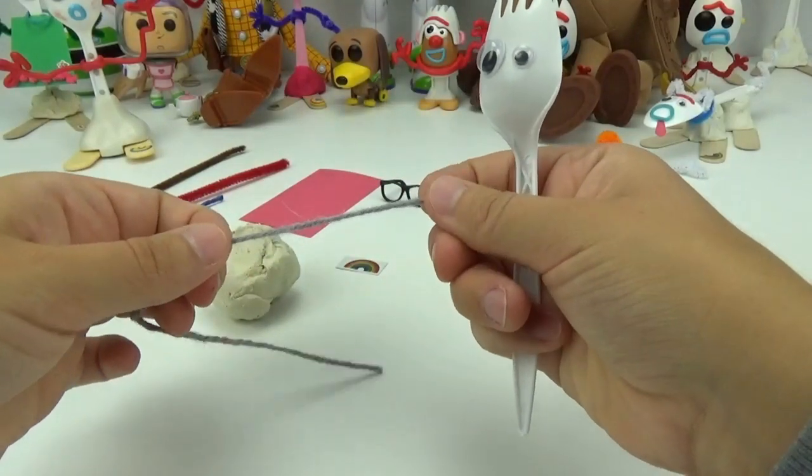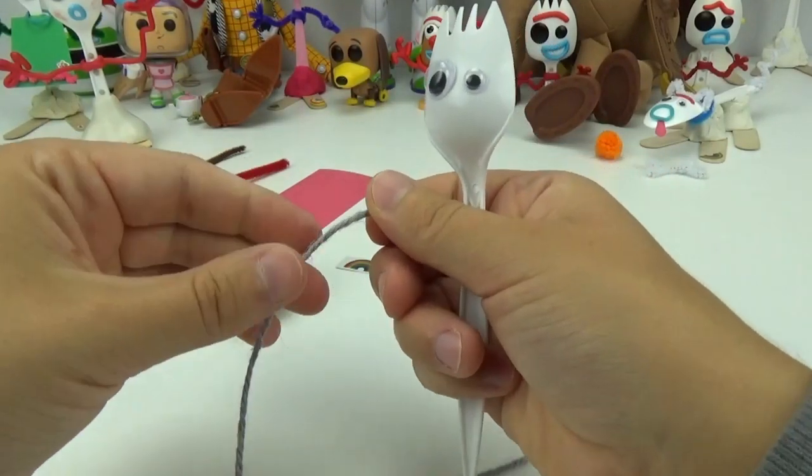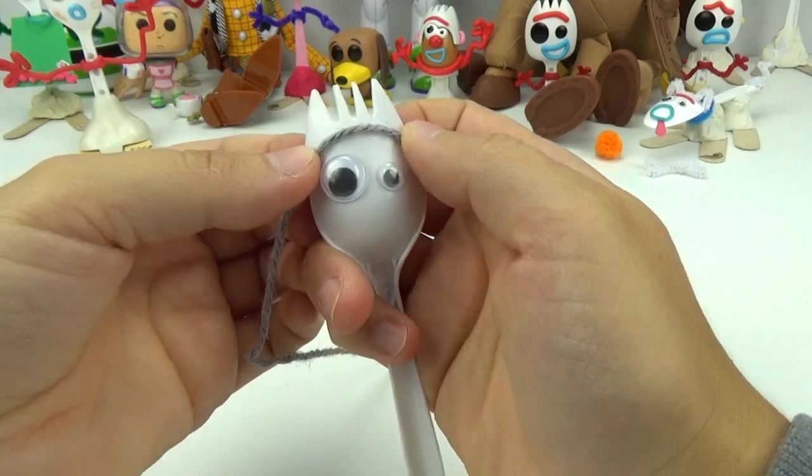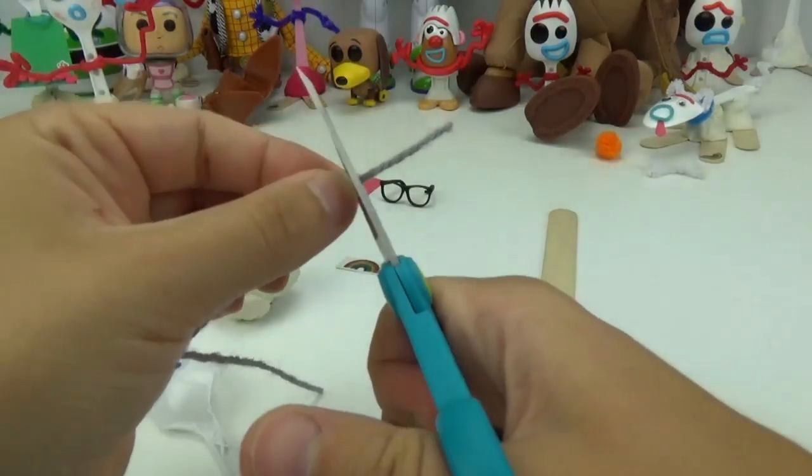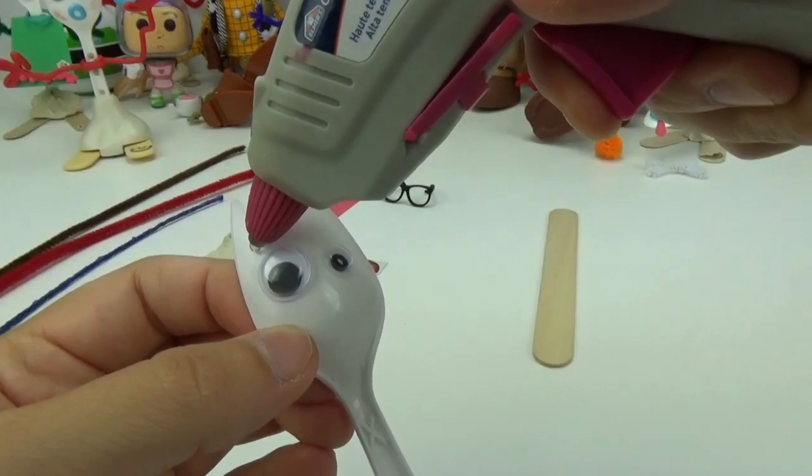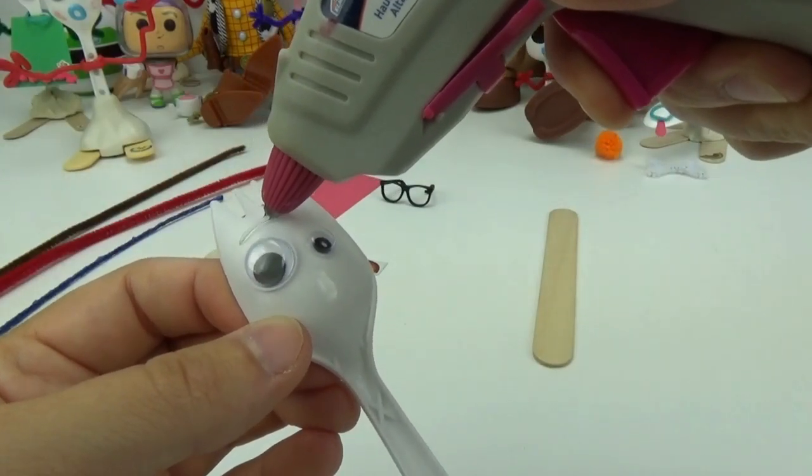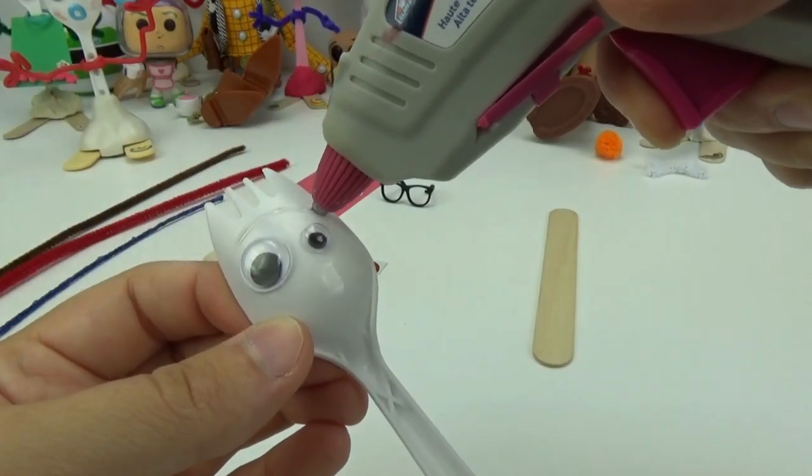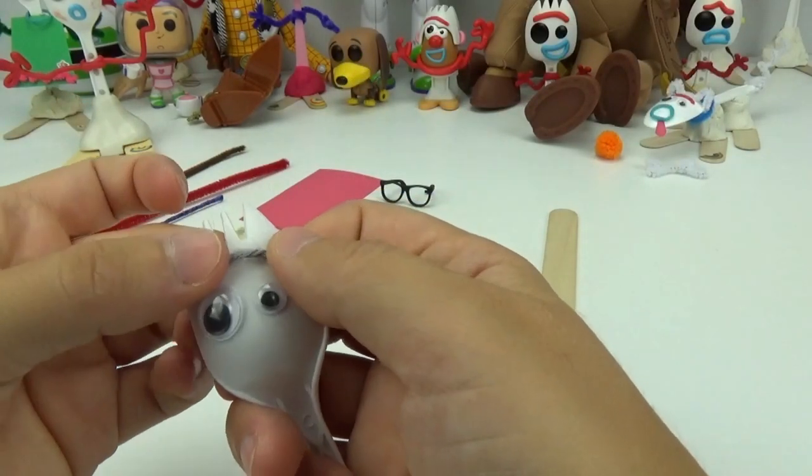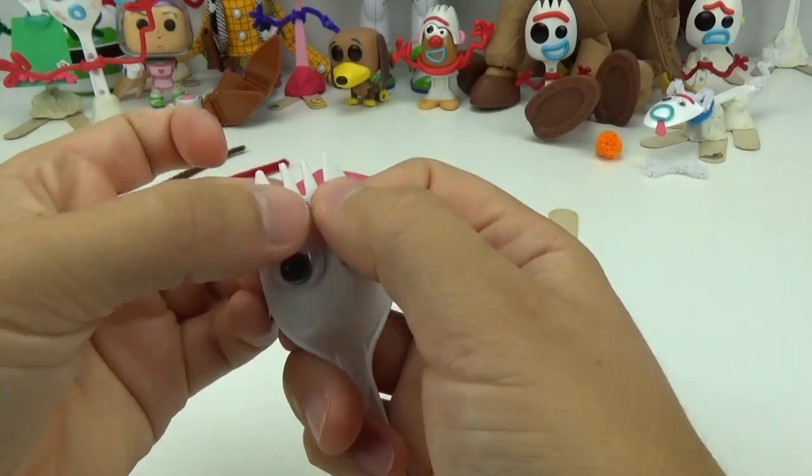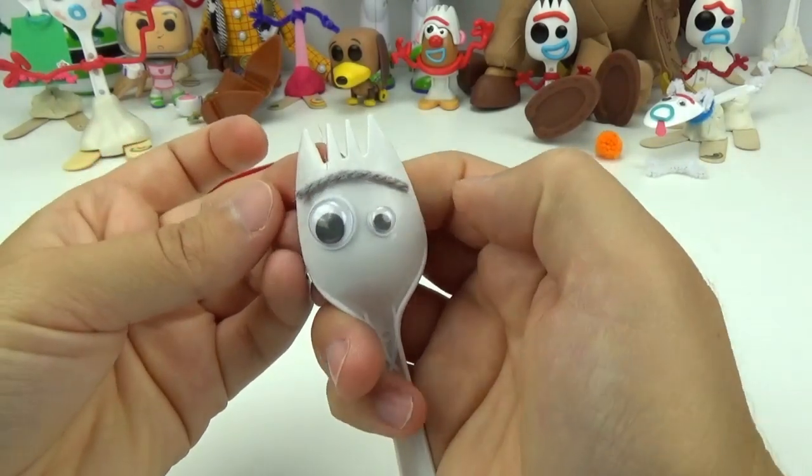Next, I am going to be using a piece of this gray yarn as his eyebrow. I want to make sure to get the right length, so I will cut it off right there. I will add some glue to his forehead where I want the eyebrow to be placed. Awesome!